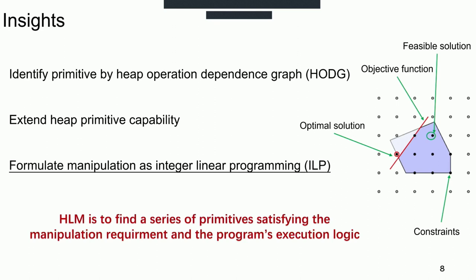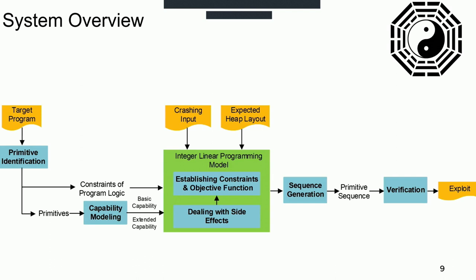The high-level workflow of our work is shown in the figure. It first identifies primitives from target program and analyzes the constraints from execution logic. Then it models the capability of primitives with basic capability and extended capability. Additionally, we set up the ILP model and handle side effects to output the primitive triggers. Then we sort the primitives with specific order and generate primitive sequence, and finally generate exploit to verify the primitive sequence.